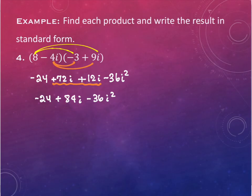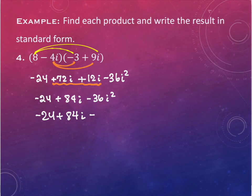Everybody good so far? Again, if these were x's, we would stop here, but they're i's. And I have an i squared. And what does i squared equal? Negative 1. So we're going to take this step. If you feel comfortable just changing this to positive 36 right now, by all means feel free to do so. I'm going to write mine out just in case. At this point I do have a positive 36.